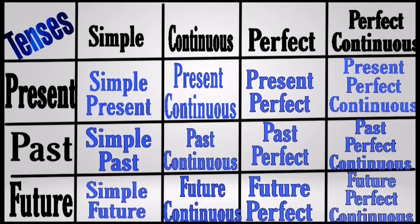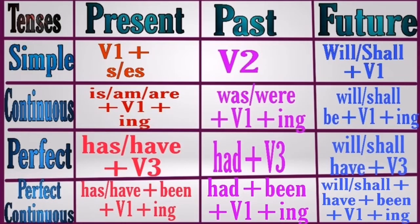So the full set of 12 tenses includes: simple present, simple past, simple future; present continuous, past continuous, future continuous; present perfect, past perfect, future perfect; and present perfect continuous, past perfect continuous, and future perfect continuous. Now we will see the rules of present, past, and future tense.